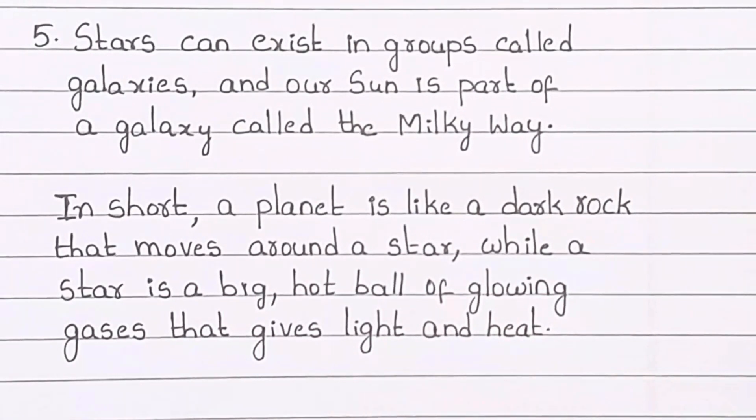In short, a planet is like a dark rock that moves around a star, while a star is a big hot ball of glowing gases that gives light and heat.